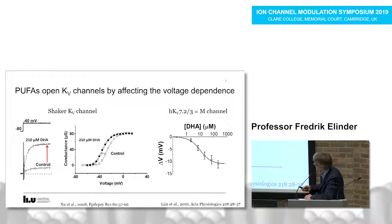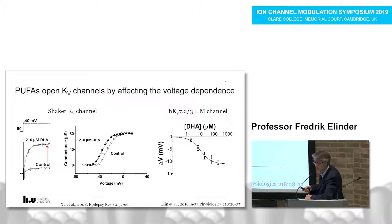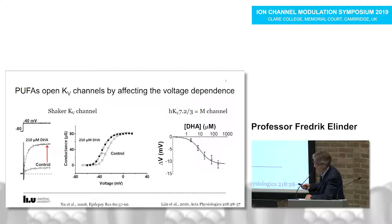We found early that polyunsaturated fatty acids open voltage-gated ion channels. We started with the shaker potassium channel — a KV1-type — and continued with the KV7.2/7.3 ion channel. They open it by shifting the voltage sensitivity in the negative direction along the voltage axis. Here is a dose-response curve of the M channel: it is fairly sensitive, with just a few micromolar of this polyunsaturated fatty acid sufficient to open the ion channel.